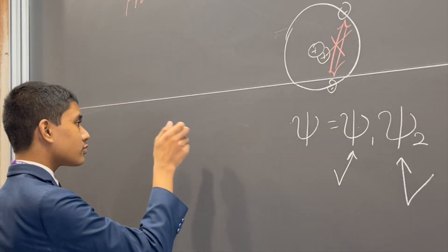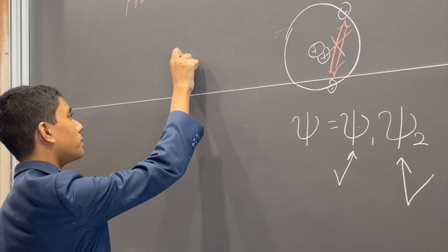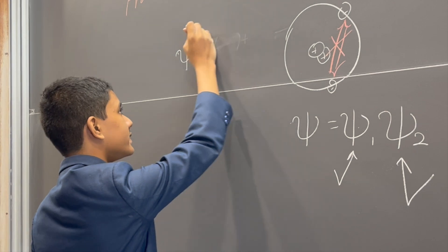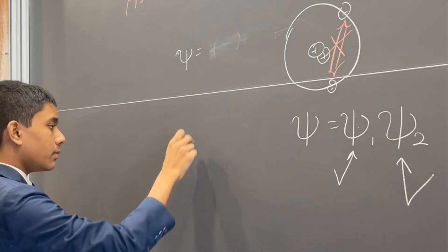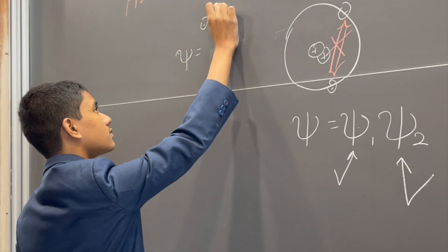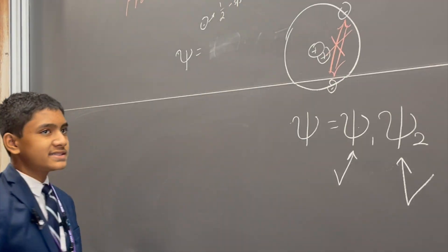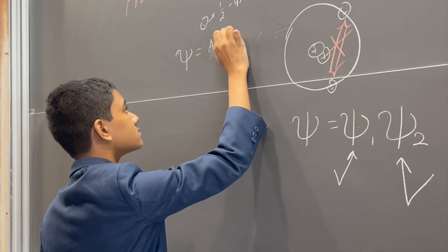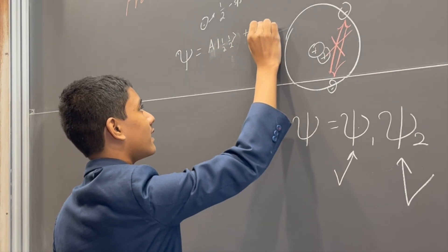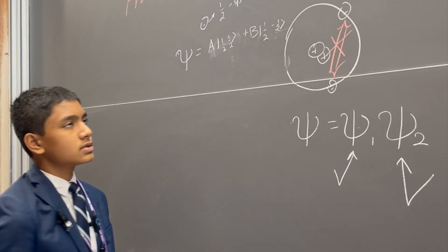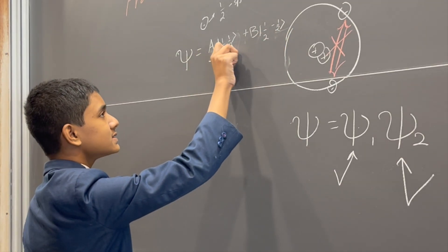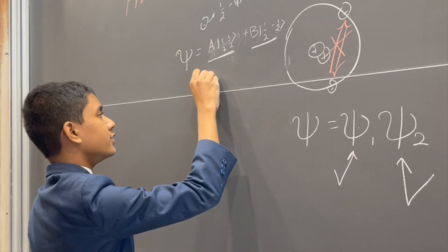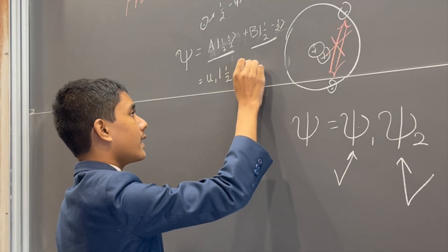Now, here's the thing. When we generally have two particles in some sort of state at any point in time, we can take a particle with half spin — an electron, for example — and summarize its state as some amount of spin up and some amount of spin down. I'm going to mark these with u1 and v1.